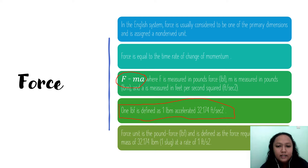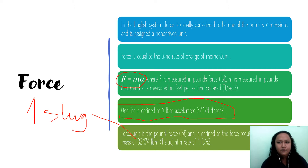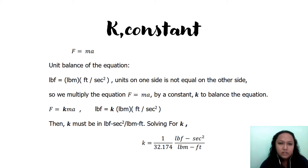The force unit called the slug is defined as the force required to accelerate a mass of 32.174 pound-mass. So one slug equals 32.174 pound-mass. From this, we derive the force equation: force equals mass times acceleration.